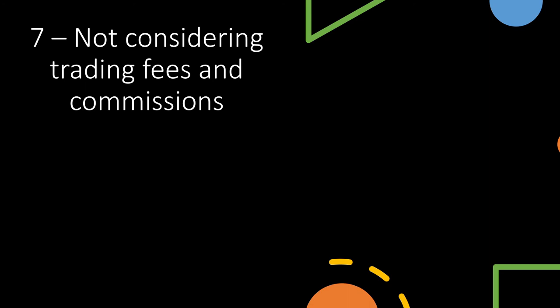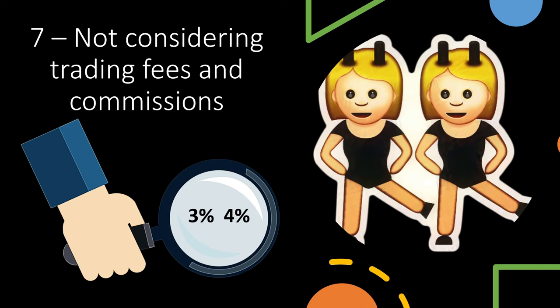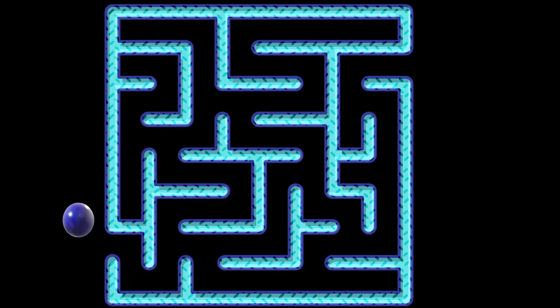This leads to mistake number seven: not taking into account trading fees and commissions. Disregarding fees and commissions might be a game changer for the majority of algorithmic trading bots. In reality, there is a very thin difference between a winning strategy and a losing strategy, and most winning technical models have an advantage of only three to four percent. This advantage can be wiped out by commissions and trading fees. You can avoid this by following strategies that minimize fees, like closing your trades within the same day rather than leaving them overnight or over weekends.